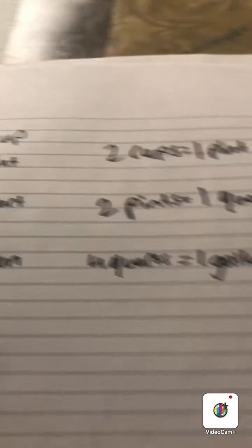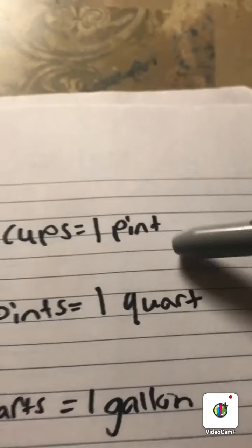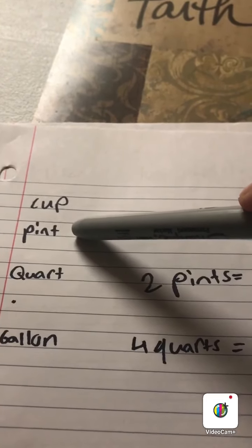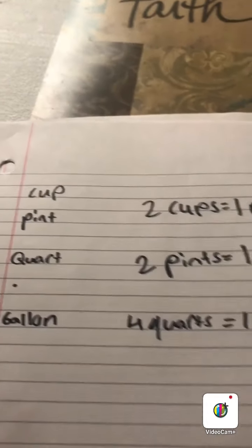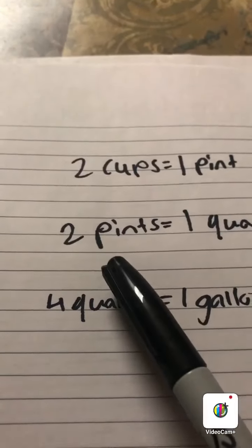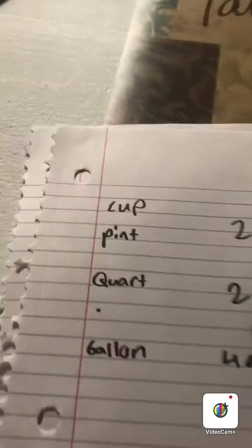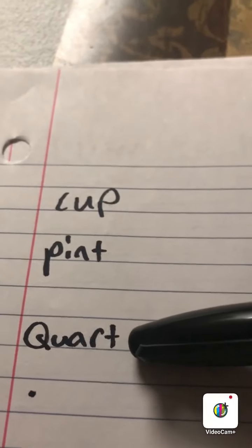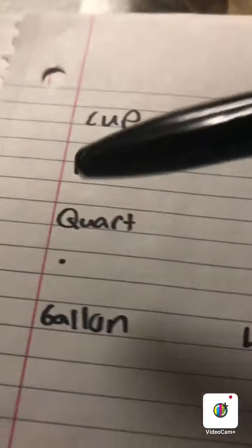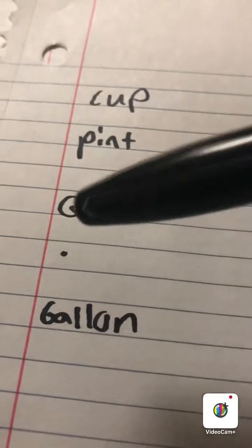For cups, it takes two cups to equal one pint. That means we need two of these in order to equal one pint to get that. Now, it takes two pints to equal one quart. We need two pints of these to get one quart of these. But now it takes us four quarts, that's four of these, to equal one gallon.